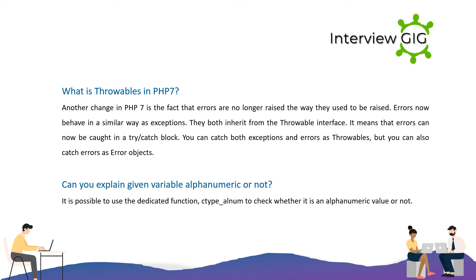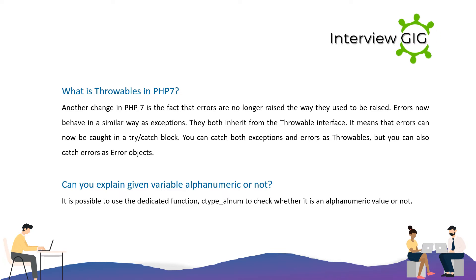What are throwables in PHP 7? Another change in PHP 7 is that errors are no longer raised the way they used to be. Errors now behave similarly to exceptions — they both inherit from the Throwable interface. This means errors can now be caught in a try-catch block. You can catch both exceptions and errors as throwables, or catch errors as Error objects.